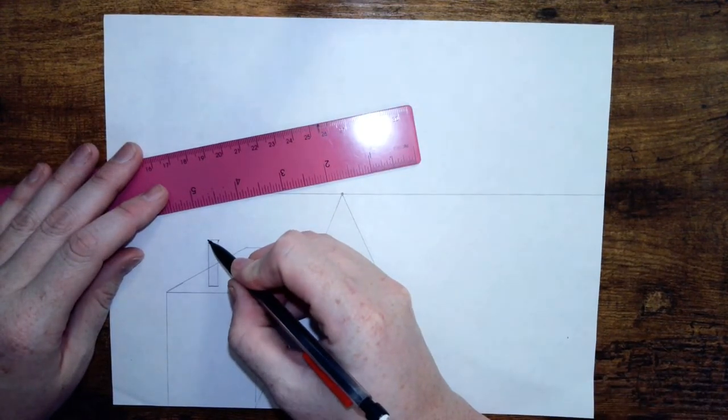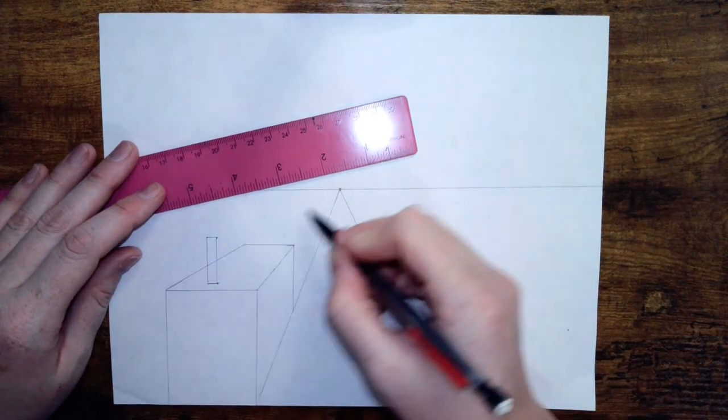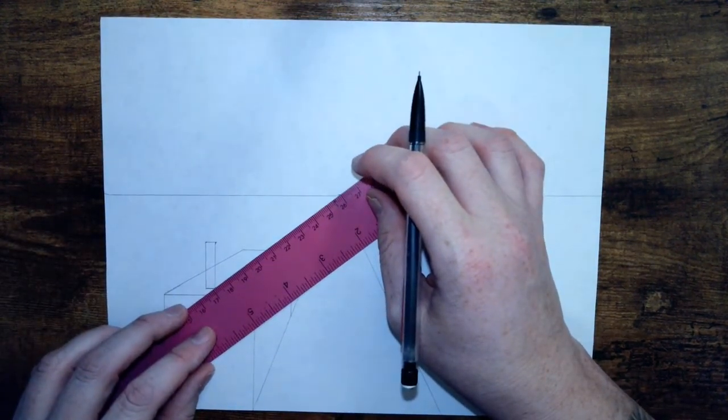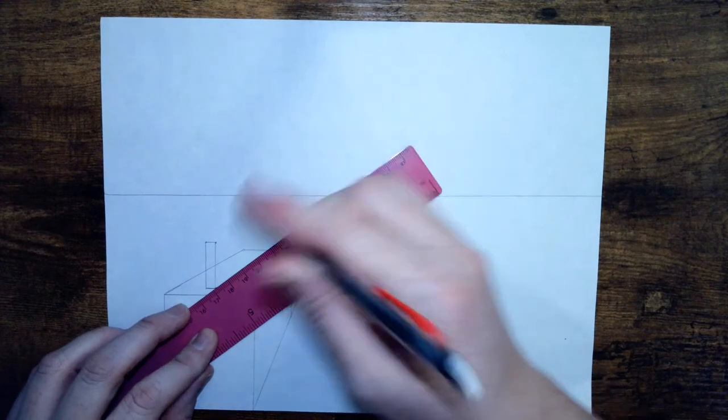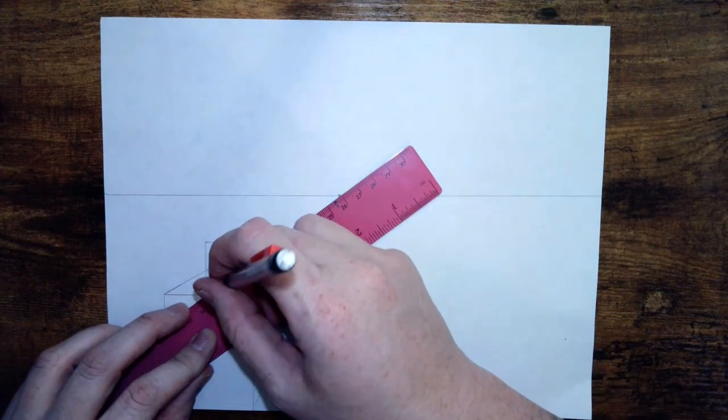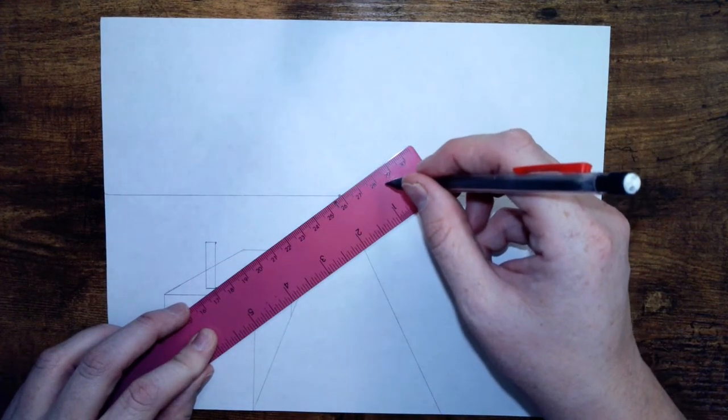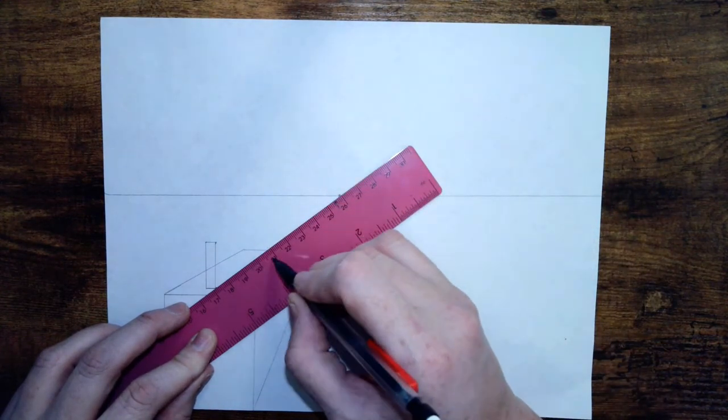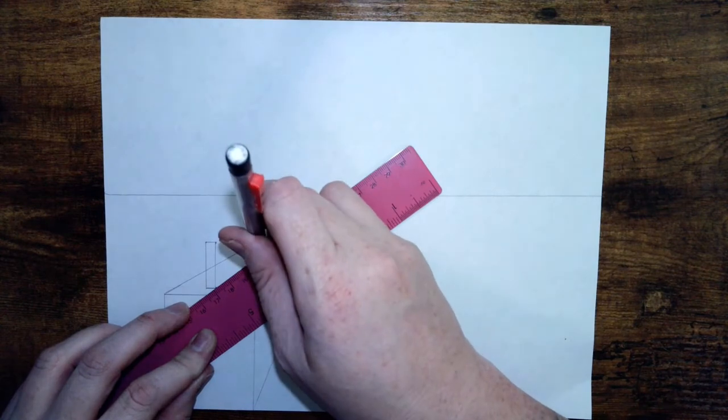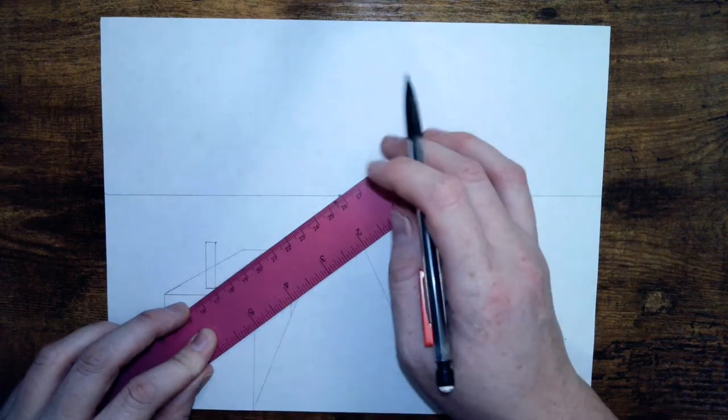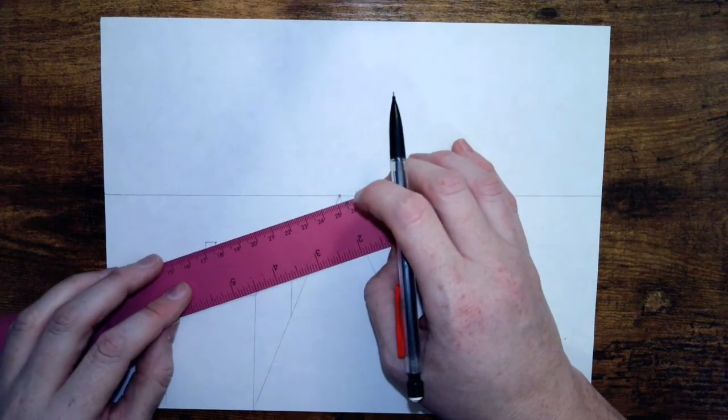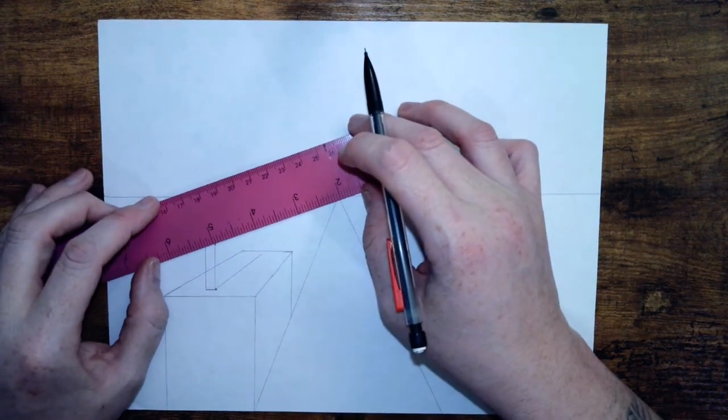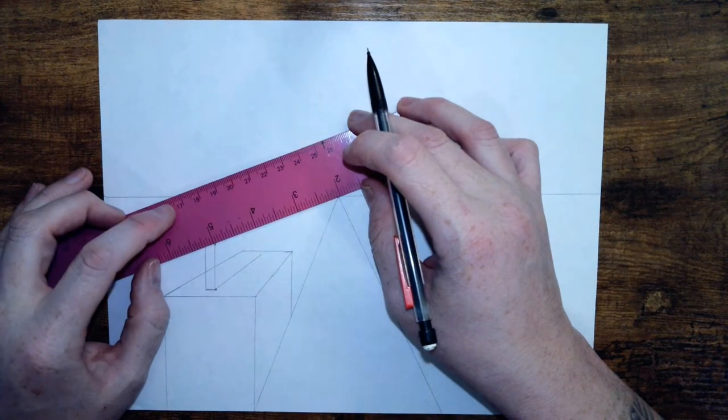We're going to match up all three points back to the vanishing point. Now we don't need to draw it all the way back because we know this billboard wants to stay on the building, so let's not go past the edge of the building. If it's hard to tell, change what side of the ruler you're using.